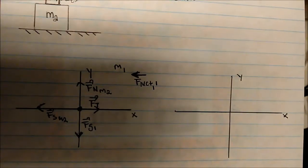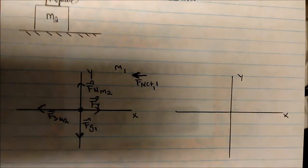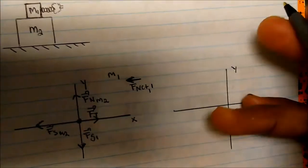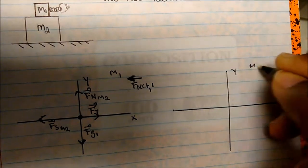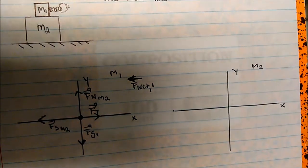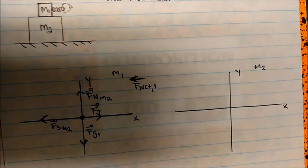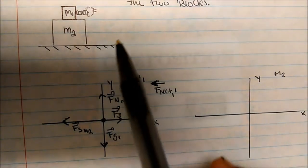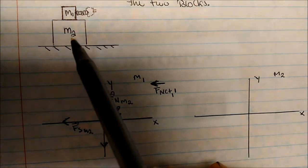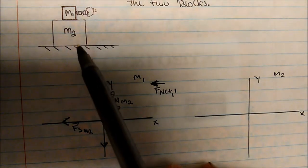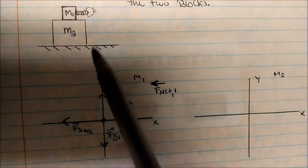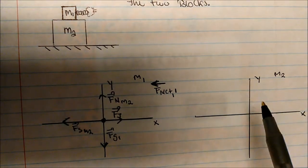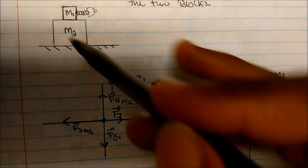Now let's draw the free-body diagram for mass 2. Let's represent mass 2 as a dot. This time we have kinetic friction between mass 2 and the surface below, but let's start with the long-range forces first.